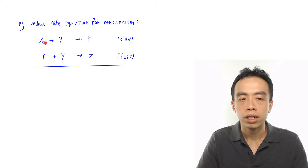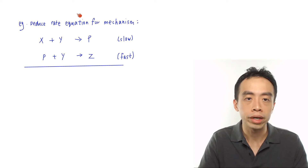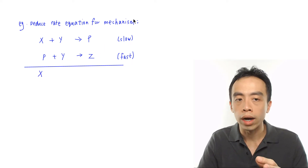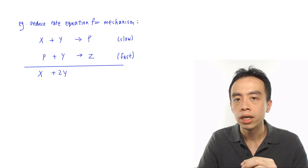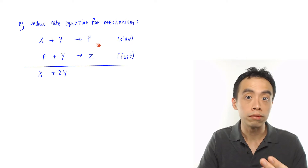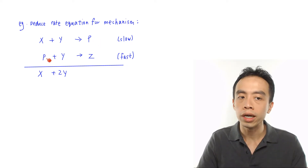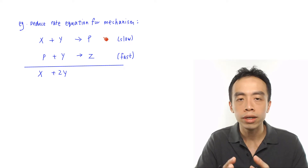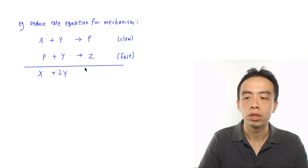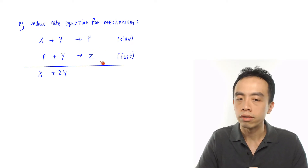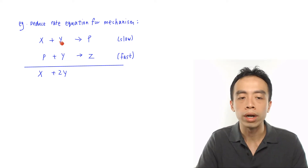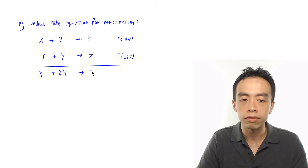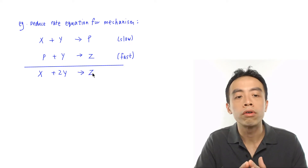X is not formed on the right hand side, so X is a reactant. On the left hand side I have two Y's and no Y on the right hand side, so Y is a reactant — giving us 2Y. Now P appears on the right hand side of step one and is used up in step two, so P is an intermediate and we cancel it away; it doesn't appear in the overall equation. Z is formed in the second step and is not on the left hand side, so Z is the product. This gives us the overall equation.